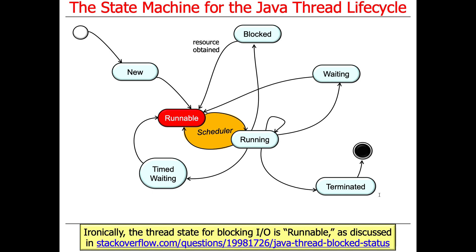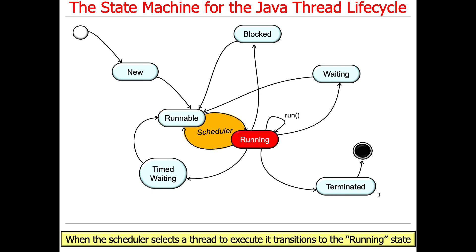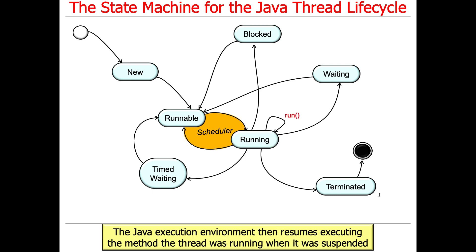You'll park in the RUNNABLE state for a while. Interestingly, the state for blocking I/O is actually RUNNABLE, which is somewhat unusual — you can read more about that. But the point is you're not running, you're runnable. When it's your turn, you are made running and your run hook method continues at whatever point it was suspended, blocking on some guarded resource.